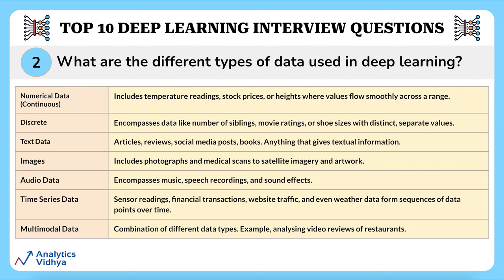Third is text data, which includes articles, reviews, social media posts, and books — a treasure trove of textual information for tasks like sentiment analysis, language translation, and text summarization. Fourth is images, ranging from photographs and medical scans to satellite imagery and artwork.